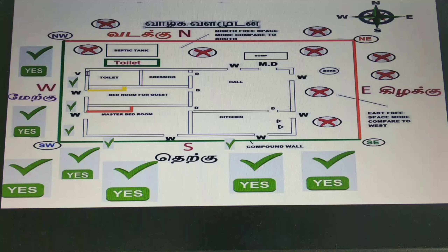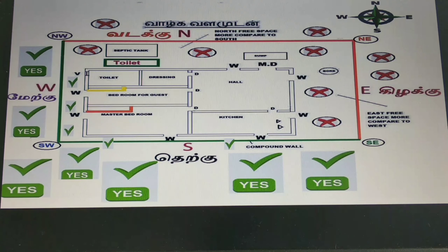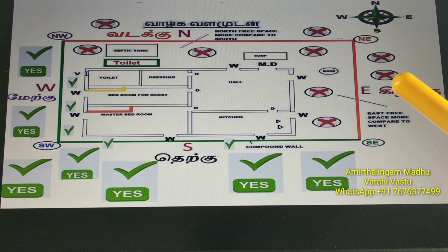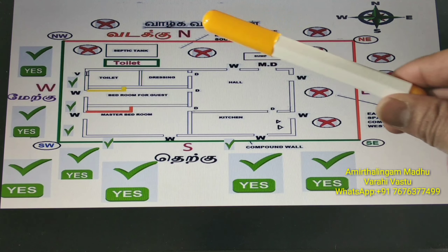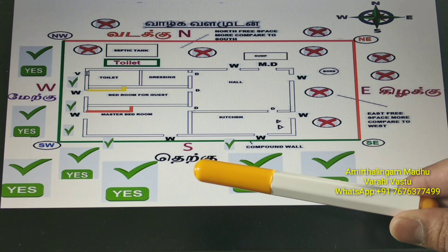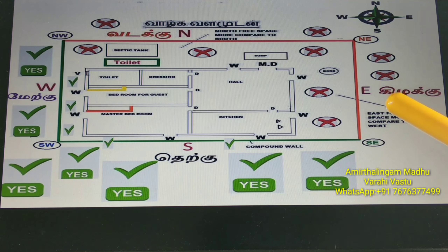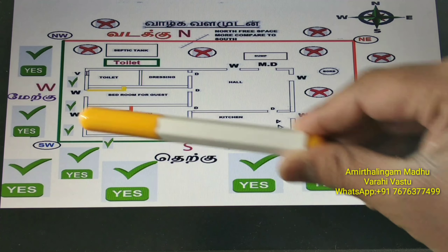Let's see in the drawing what directions we can keep trees, for better understanding. Now you are seeing a typical Vasthu drawing. First, we will see the directions: north, south, east, west.